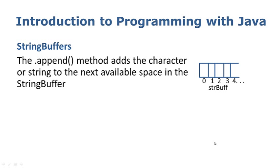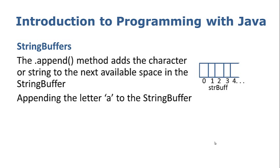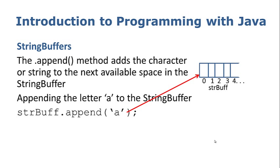The append method allows us to add a character or a string to the next available space in the string buffer. So if my string buffer is empty and I append a character to it, it's going to put the character in the first available space, which is index 0. If we take a look at appending the letter A to the string buffer, the code is strbuff.append and then in the brackets we put whatever character we want to add. Here we're appending the letter A — single quotes because it's a single character — and what that does is it puts the letter A in index 0.